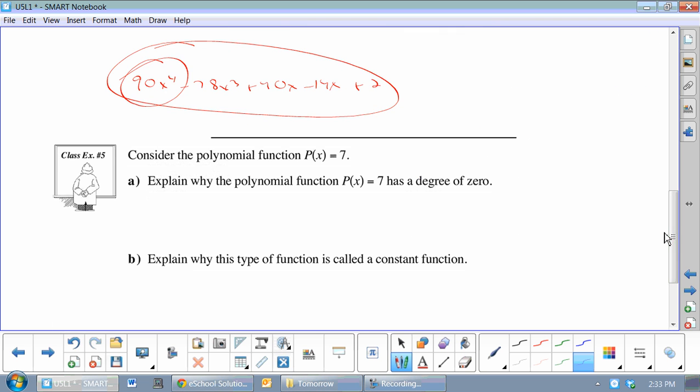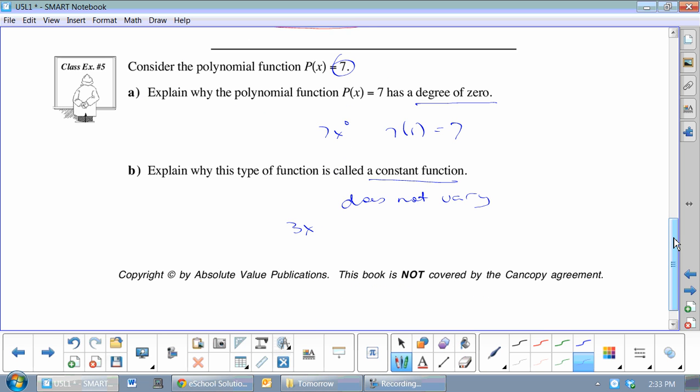Now, explain why just the number 7 has a degree of 0. Well, this is 7x to the 0, right? Because that's 7 times 1, which equals 7. Why is it called a constant? Because it does not vary. As in, 3x varies, x could be anything. The number 7, it's just the number 7. Never going to change.